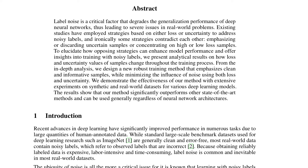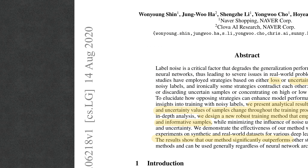They start by mentioning the importance of loss and uncertainty as training dynamics highlighted in previous literature. Their first major contribution is presenting analytical results on how loss and uncertainty values of samples change throughout the training process under different types of noise. The other contribution is a new robust training method that emphasizes clean and informative samples, focusing on low-loss but high-uncertainty examples. They show their method outperforms previously introduced methodologies. This paper was published in August 2020.